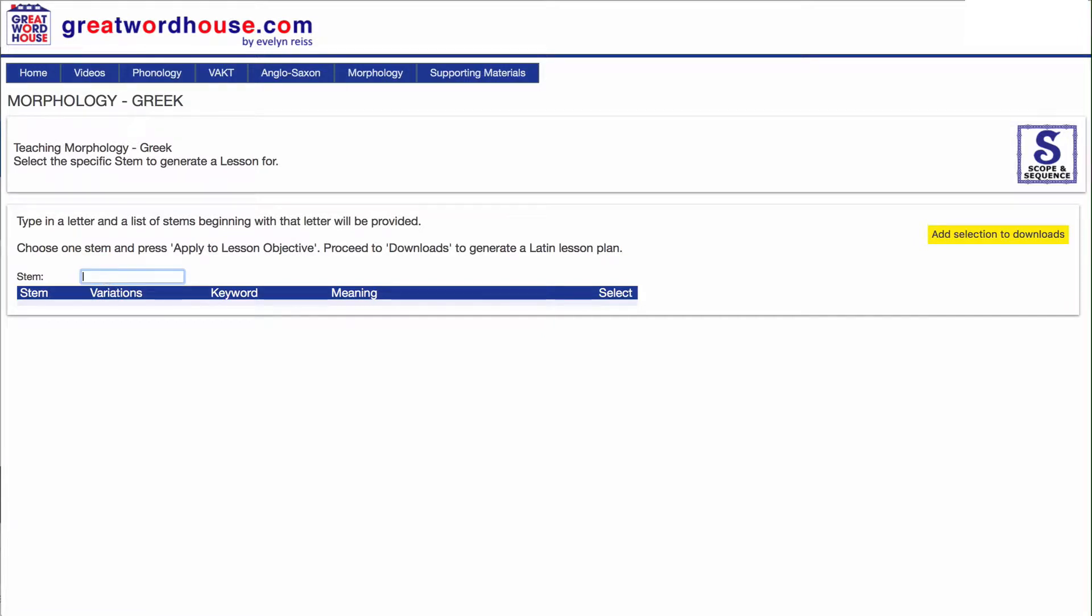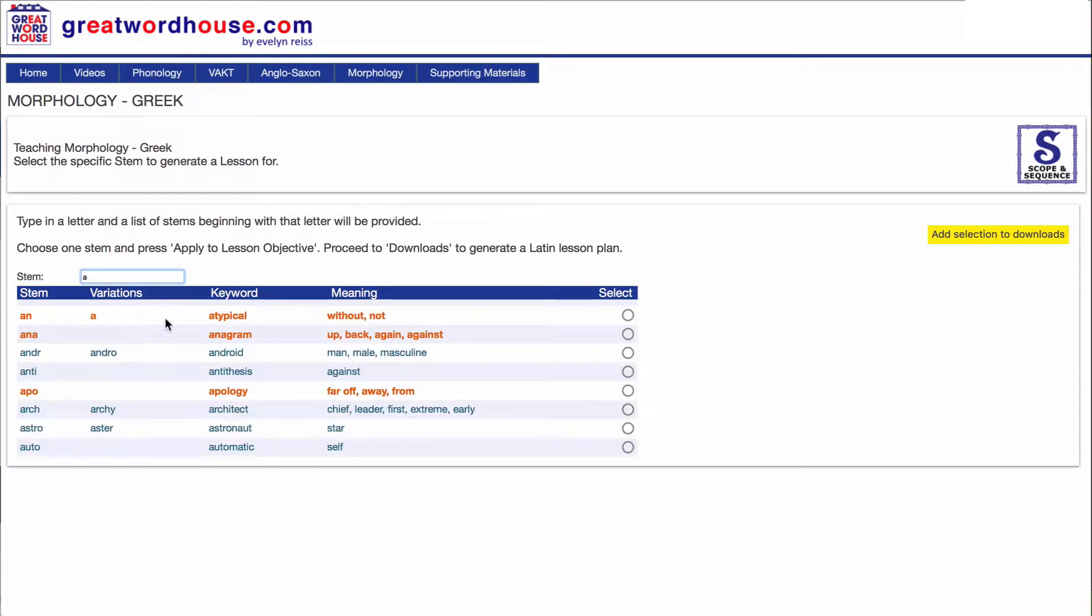Enter a letter and you will receive a list of Greek combining forms that begin with that letter. Only one choice is possible at a time. The orange color indicates that these were previous choices and the program remembers your choice.